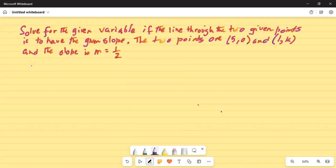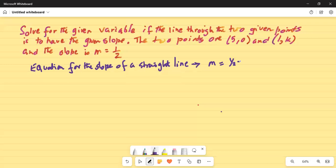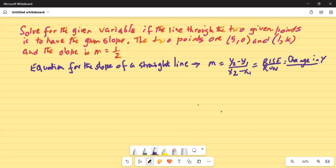We will use the equation for slope of a line. Equation for the slope of a straight line is m equals y2 minus y1 divided by x2 minus x1, and this is equal to rise over run or change in y divided by change in x.